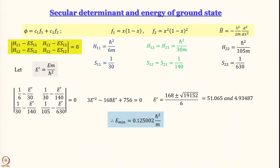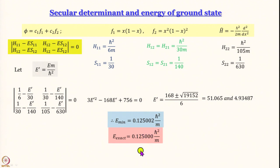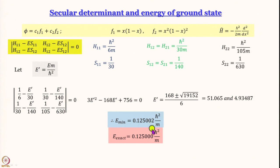The exact result for particle in a box with L equal to 1 is 0.125000 h-bar²/m. Our calculated value is 0.125002. So whereas earlier using phi equal to x^alpha (1−x)² gave a 4 percent overestimation, now the agreement is perfect up to the fifth decimal place — the discrepancy only appears in the sixth decimal place, where the exact value is 0 and the calculated value is 2.